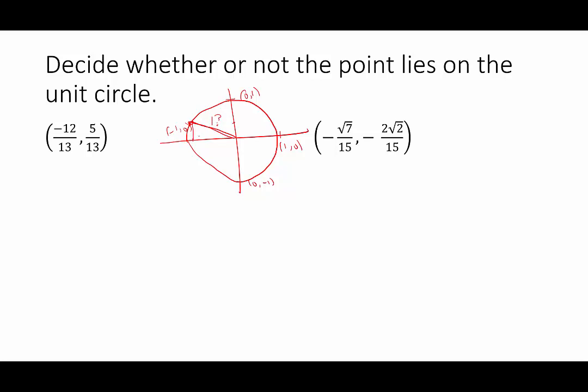The legs would be comprised of one leg is that x value and one leg is the y value. So what we're looking for to decide if a point lies on the unit circle is does x² + y² equal 1²? If the answer is yes, then it does lie on the unit circle. If the answer is no, then it does not lie on the unit circle.